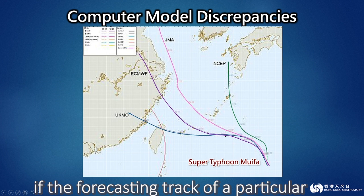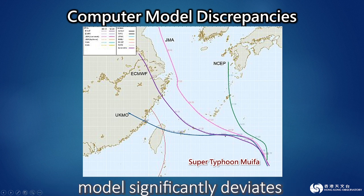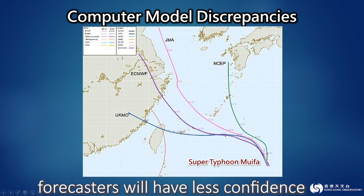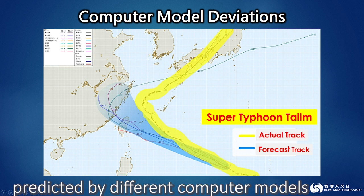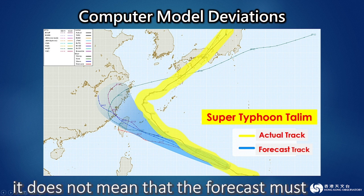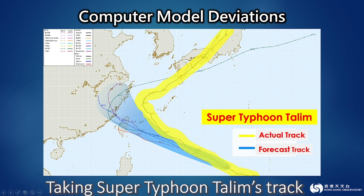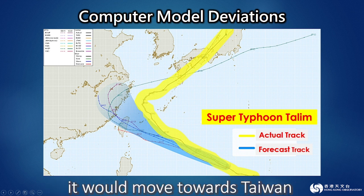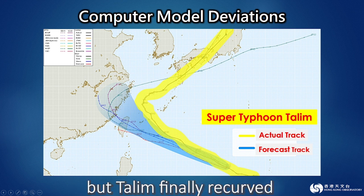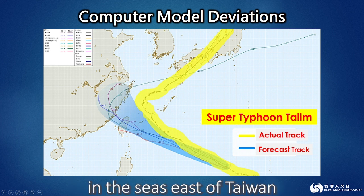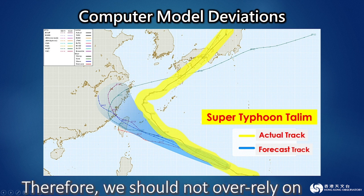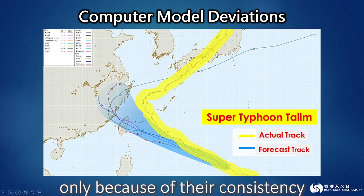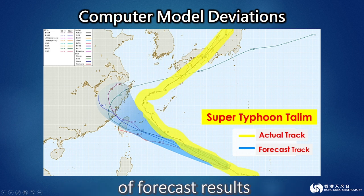During operation, if the forecasting track of a particular model significantly deviates from other models, forecasters will have less confidence on that model. Sometimes, even though the tracks predicted by different computer models are relatively consistent, it does not mean that the forecast must be very accurate. Taking Super Typhoon Talim's track as an example, several models forecasted it would move towards Taiwan and the coast of Fujian. But Talim finally recurved in the seas east of Taiwan, moved across the East China Sea, and hit Japan. Therefore, we should not over-rely on the forecast of models only because of their consistency, especially based on just a couple of forecast results.